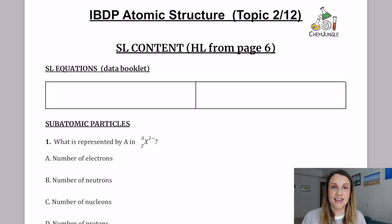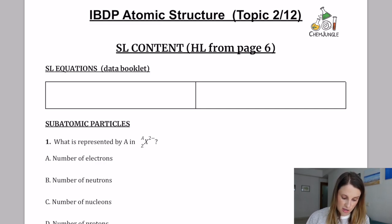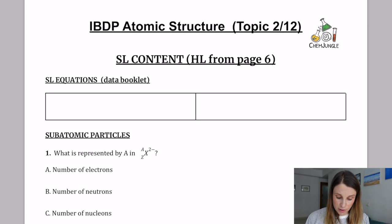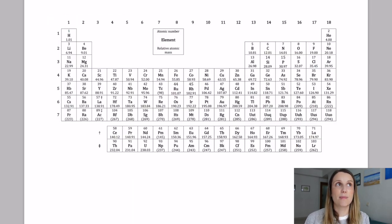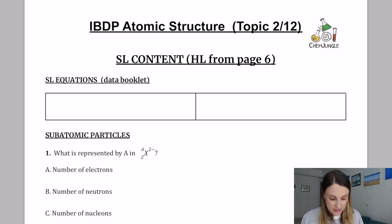Before we get started with the SL content, let me show you what documents you're going to need. You'll find a question document PDF in the description which you can download and have a go at yourself — I really recommend having a go before watching this video. You'll also need the chemistry data booklet and an IB periodic table oriented the right way. This is the worksheet we're going through today, split out into the different subtopics in atomic structure.